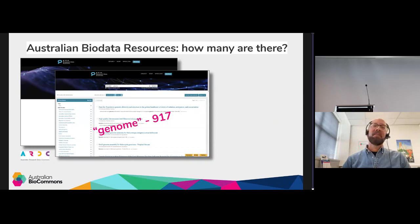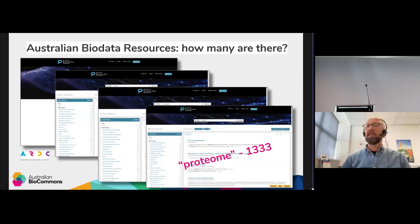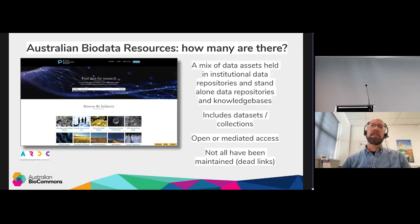Searching Research Data Australia for biologically relevant terms gives variable numbers: 'genome' returns 917 records, 'metabolome' returns 9, and 'proteomics' returns over a thousand.